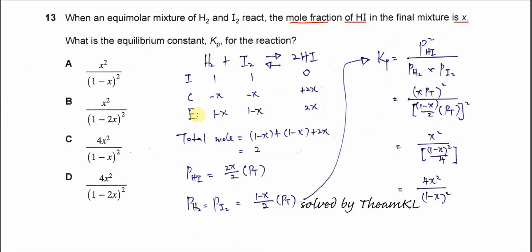If you don't know where to start from, you can actually refer to the answers. Because the answer is 1 minus X and 1 minus 2X, and we know that is always products over reactant. So we should start from one mole each.